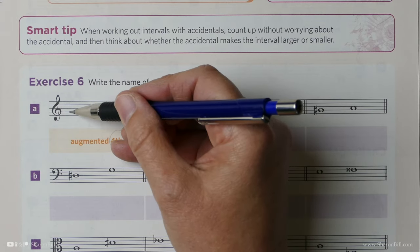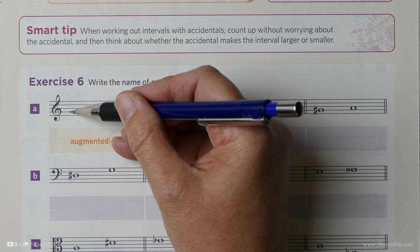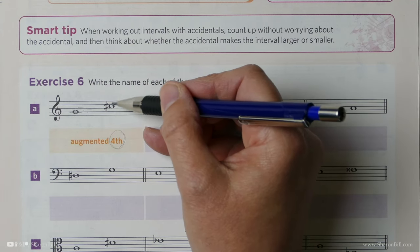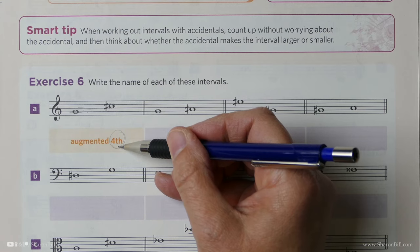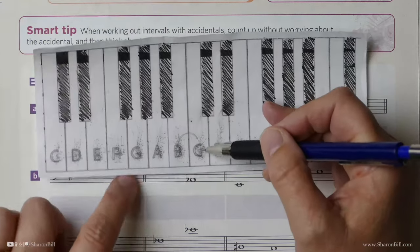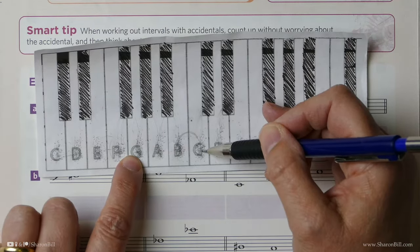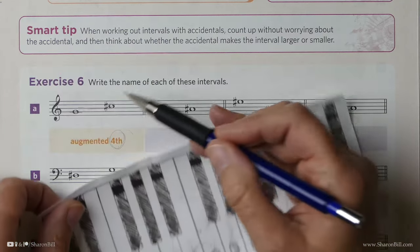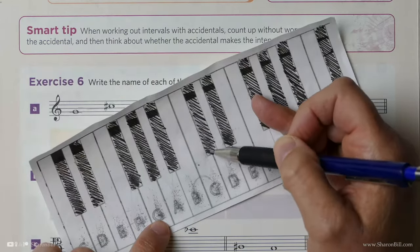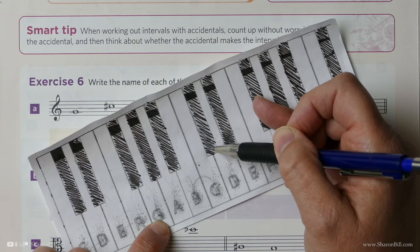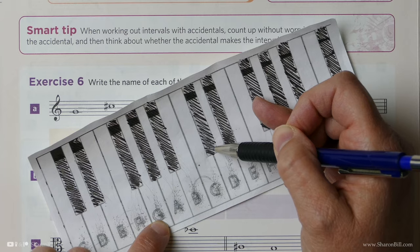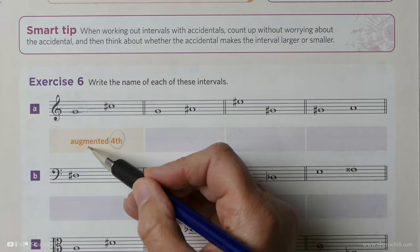Remember, it's like the steps of the scale. We count the lowest note as the tonic. One, two, three, four. So we know that it's a fourth of some sort, and we know that G to C is perfect. And then we've raised it by adding a sharp, and so it becomes bigger. We've augmented that perfect interval, and so it becomes an augmented fourth.